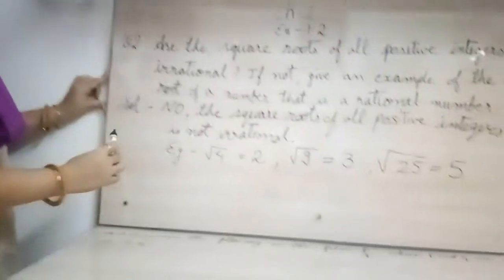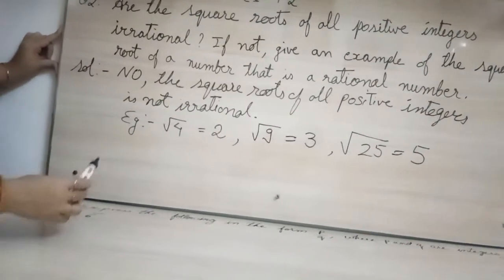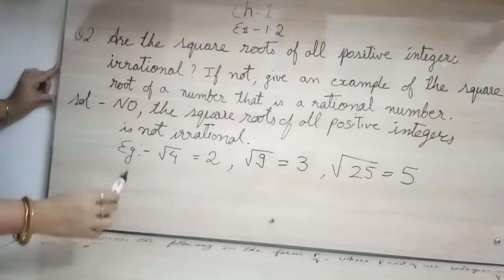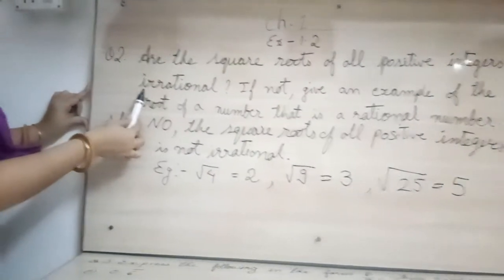Only when you take square root of prime numbers, like 2, 3, 5, 7, if I write them in square root, then they become irrational numbers.